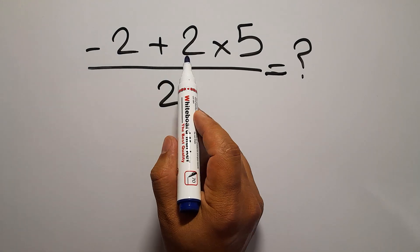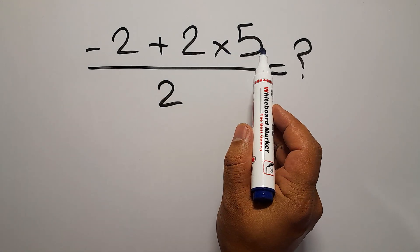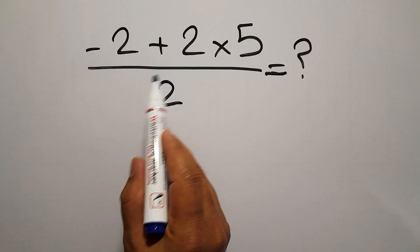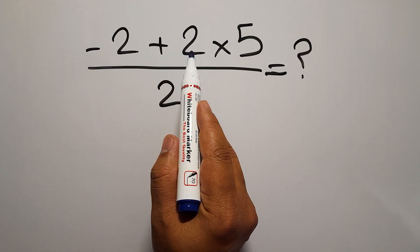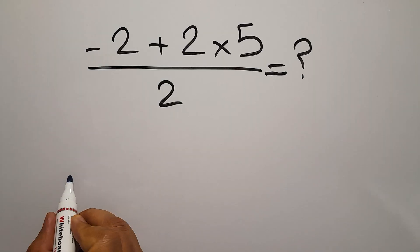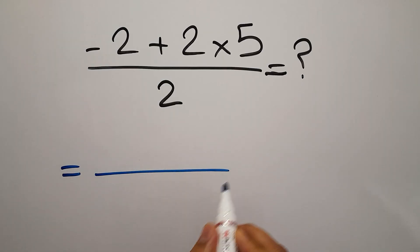Negative 2 plus 2 times 5, whole over 2. Negative 2 plus 2 equals 0, so our fraction equals...